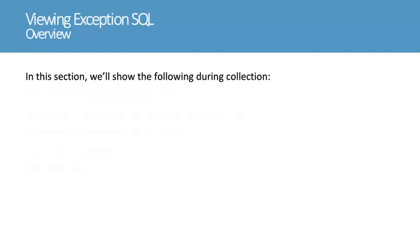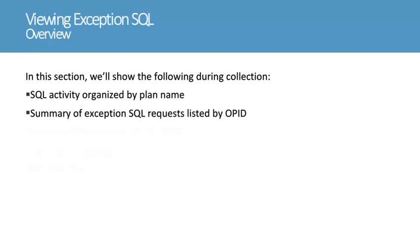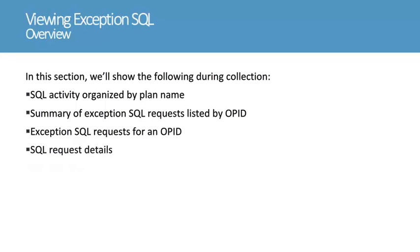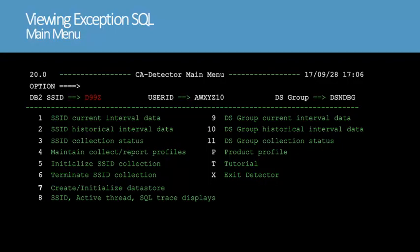In this section, we'll show exception SQL activity while a collection is in progress. We'll start at the main menu, select the current interval, and view SQL activity organized by plan name. We'll then show the summary of exception requests listed by op-id, and show the exception requests for an op-id. Finally, we'll show the details of an SQL request, and show the SQL call text that caused the exception. We'll press F3 until we return to the main menu.